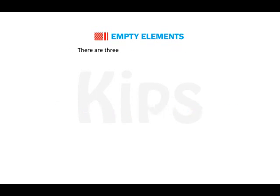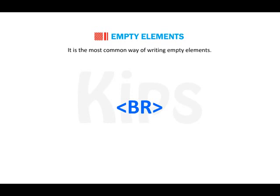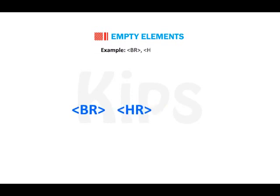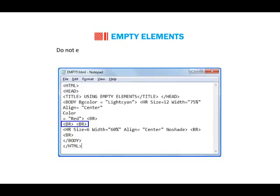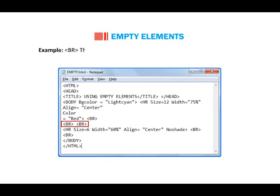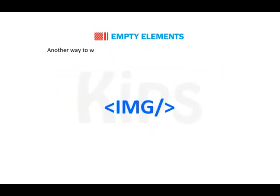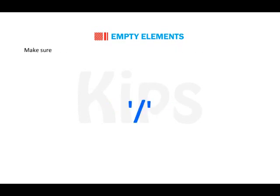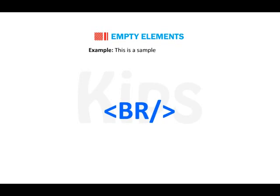There are three ways to write empty elements. The first way is to only specify the start tag — this is the most common way of writing empty elements. Example: br, hr, img. The second way is to not enclose any data between the start tag and the end tag. Example: br. Note that no closing tag is required here. The third way is to write empty tags as self-closing tags — leave one space and insert a forward slash after the tag name. Example: br/.